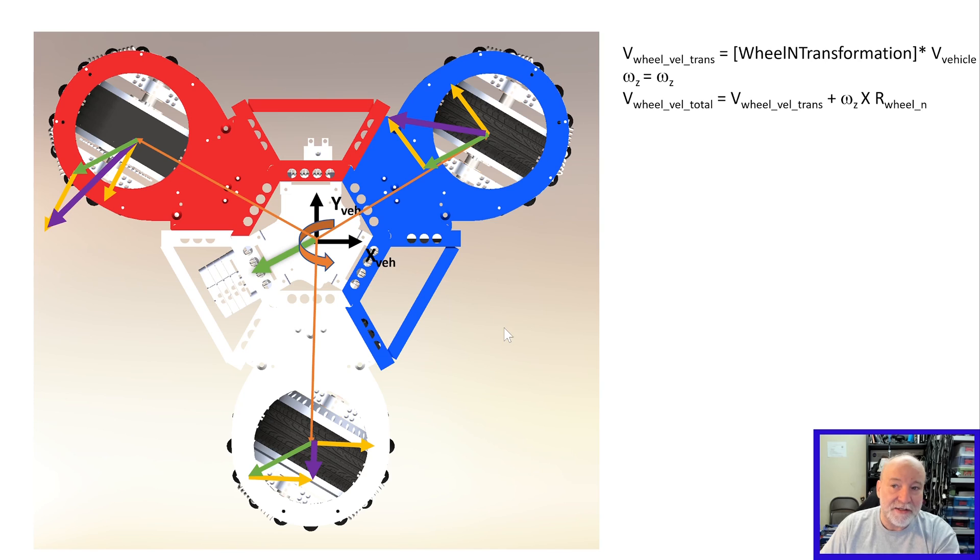This is the math behind it. Right, up here, as before you take the vehicles, they do the transformations in the vehicle frame to the wheel frames. And then you take the translational, and then you add the omega cross r term, and that's the total vehicle frame. That's it.